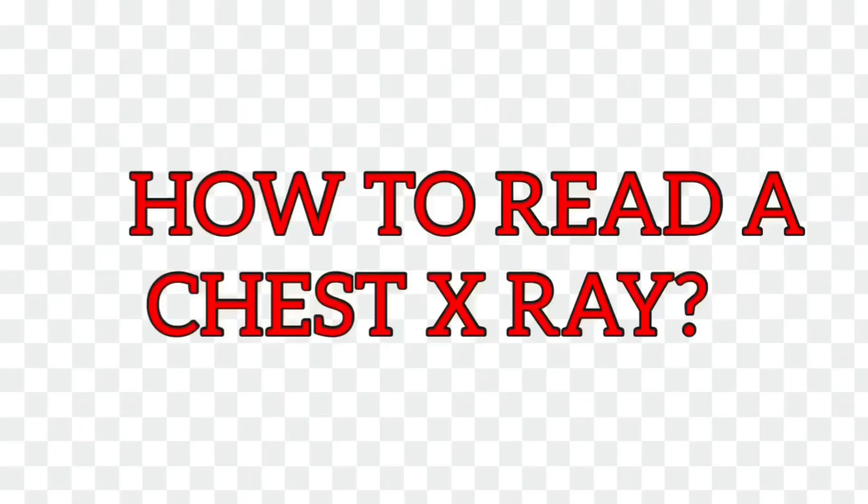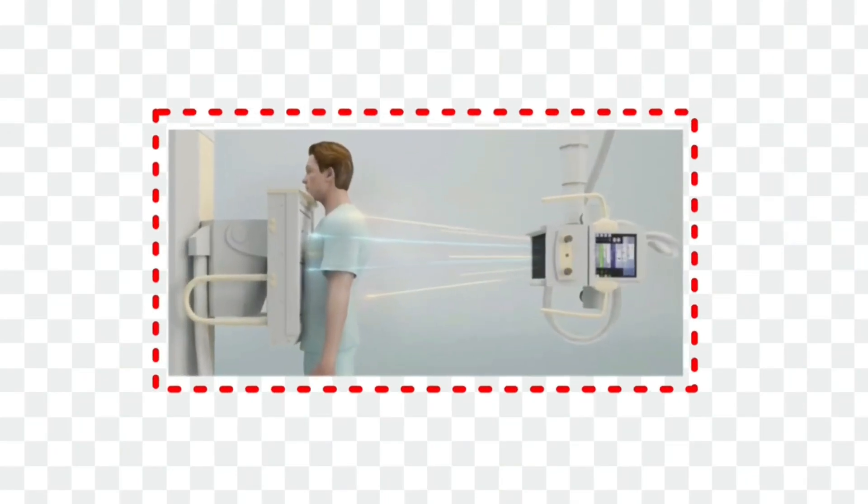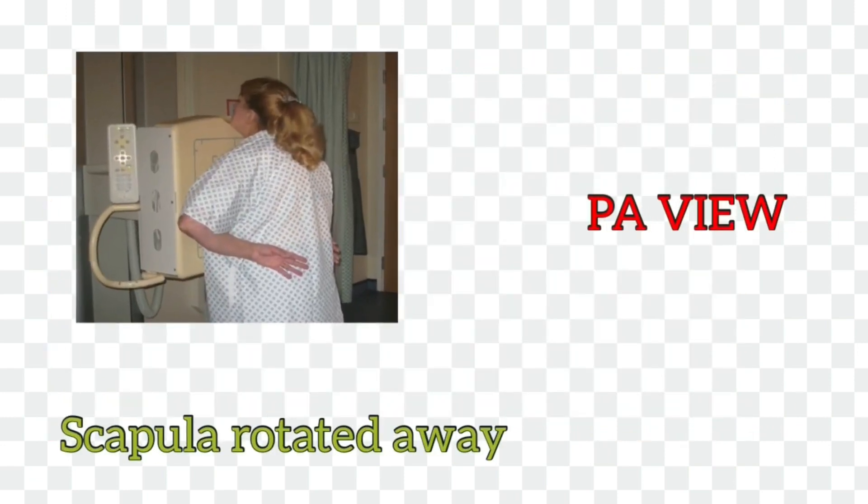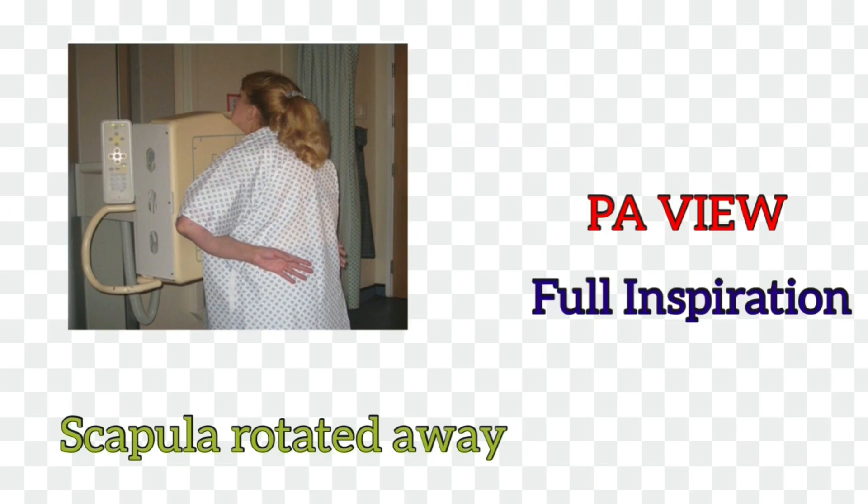Today I will tell you how to read a chest x-ray. Chest x-ray is one of the most common x-rays that we come across as physicians, so I will tell you what is a general methodical approach to read a chest x-ray. Chest x-ray is normally taken as a PA view with the patient standing at a distance of 180 centimeters, with the scapula rotated away from the lungs and in full inspiration.